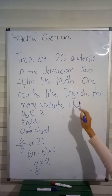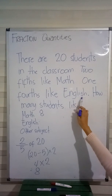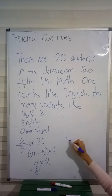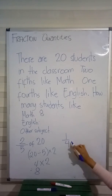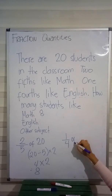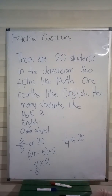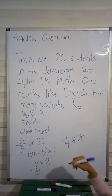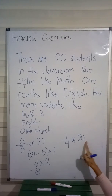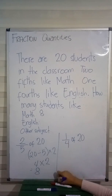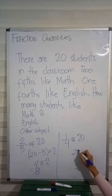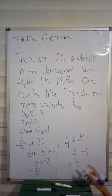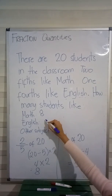Next question: English. How many students like English? There is one fourth who like English. So we need one fourth of the total number of students — one fourth of 20. In this case, our numerator is 1, so we only follow one step: divide our number 20 by our denominator 4. 20 divided by 4 equals 5. Therefore, there are 5 students who like English.